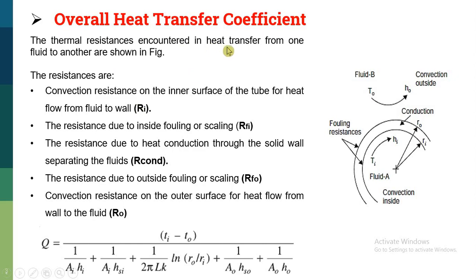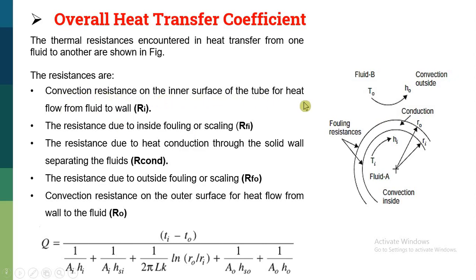Now let us understand this diagram. This is a tube which separates the hot fluid and cold fluid. If hot fluid is passing through the tube and cold fluid is present outside the tube, there are different kinds of resistances which may occur. Fouling may occur from inside as well as outside. The first resistance is convection resistance on the inner surface of the tube — heat flowing from the fluid to the wall — which is called RI.